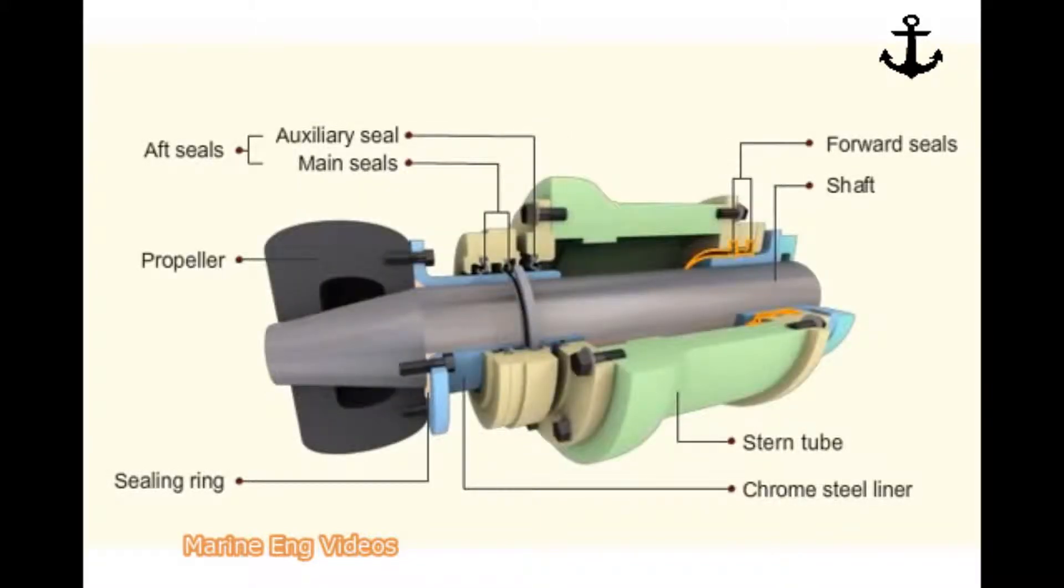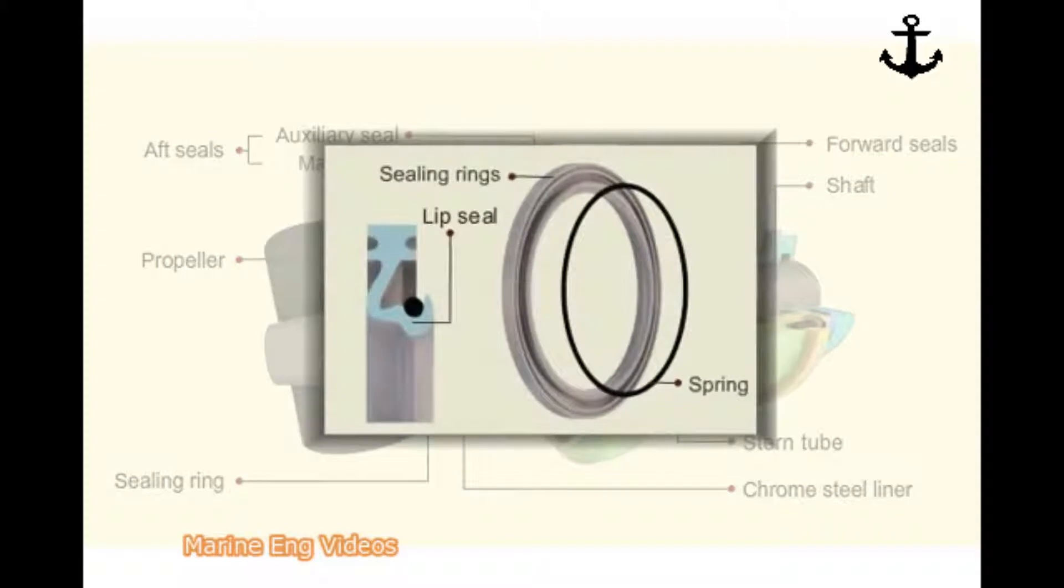The forward sealing rings prevent oil leakage to sea. Spring load and oil pressure of the system. Lip seals hold oil within the stern tube and accept slight misalignment.